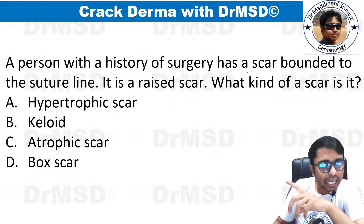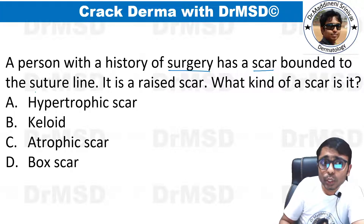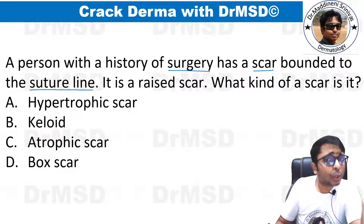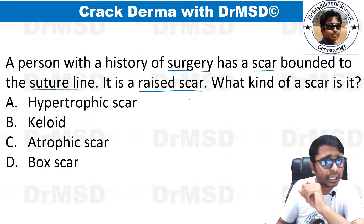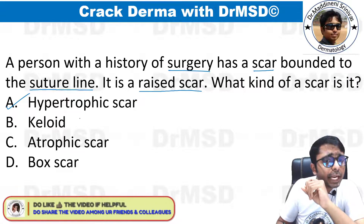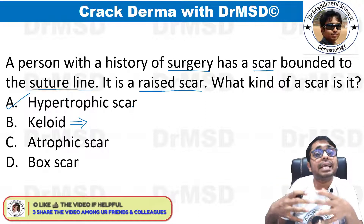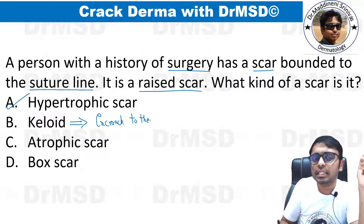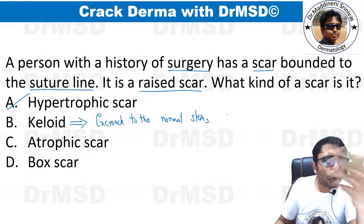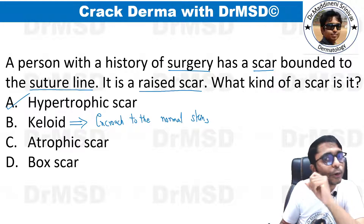A patient with a history of surgery has a raised scar bounded to the suture line — this is a hypertrophic scar. The key differential is keloid: in keloids, the scar is NOT bound to the suture line; it extends and encroaches onto normal adjacent skin. Keloids can also appear spontaneously without trauma. Answer: hypertrophic scar.